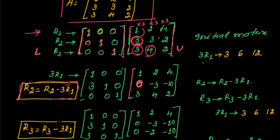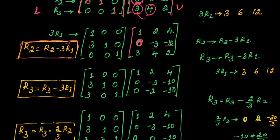Next, to make the element in R3 equal to 0, the row operation is R3 = R3 − 3R1. Multiplying R1 elements by 3: 3 − 3 = 0, 4 − 6 = −2, and 2 − 12 = −10. So that element is now 0.